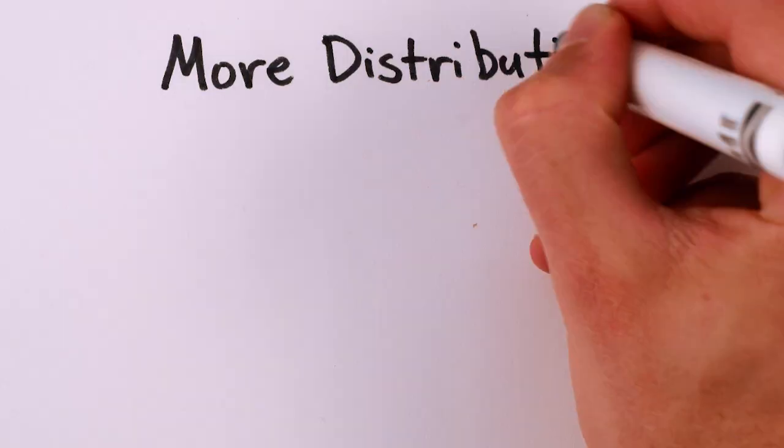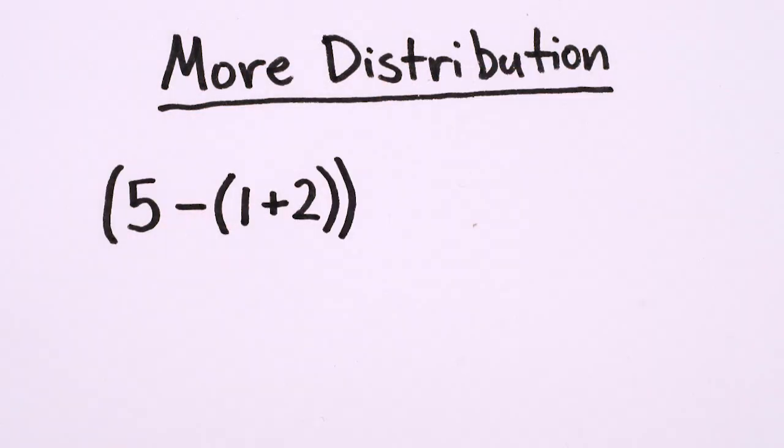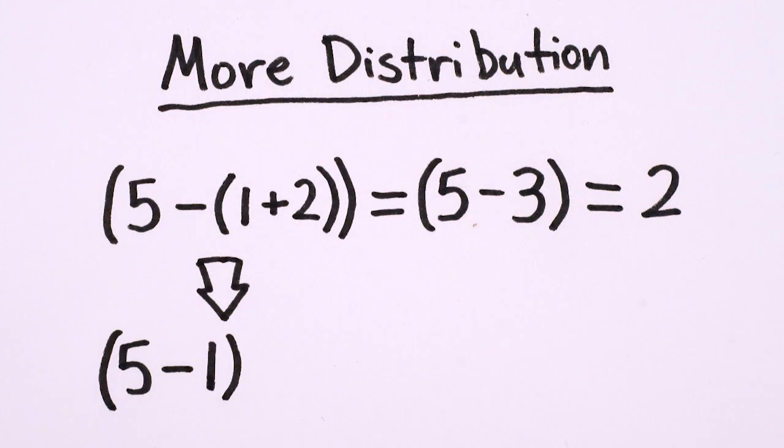It even works for addition and subtraction, 5 minus 1 plus 2 is 5 minus 1 minus 2.